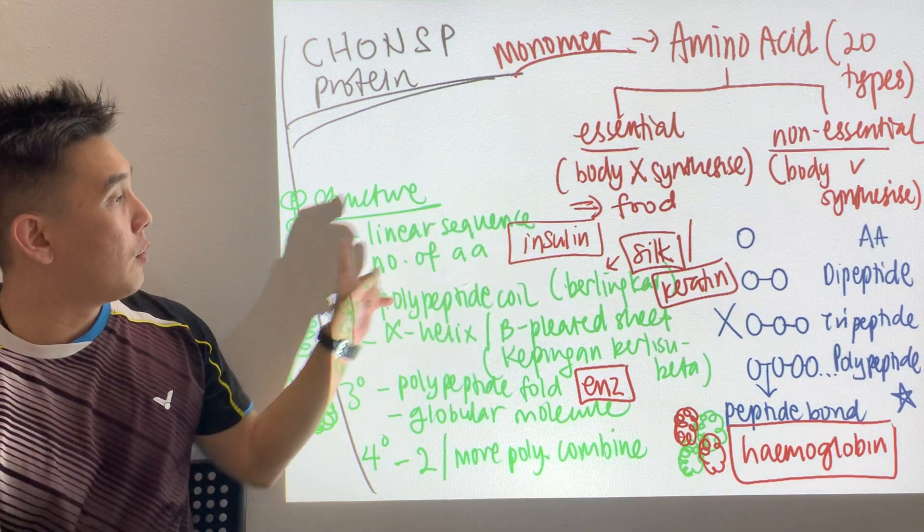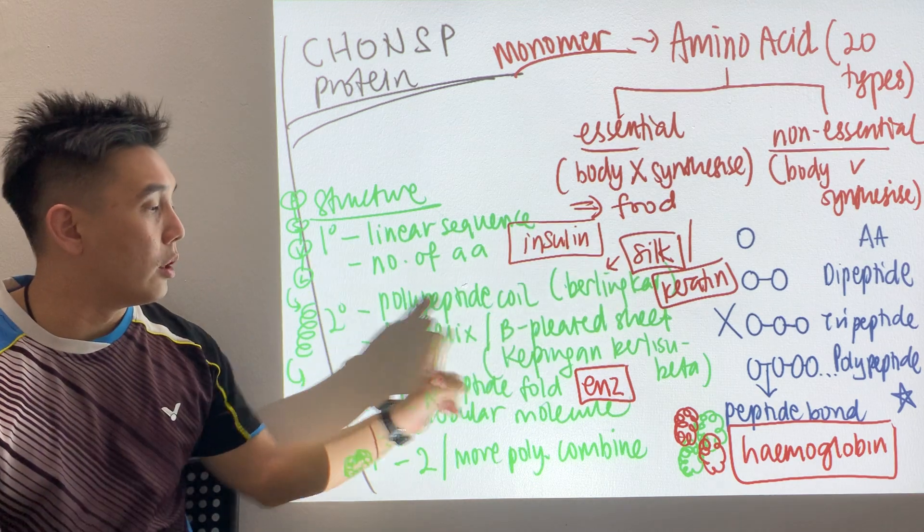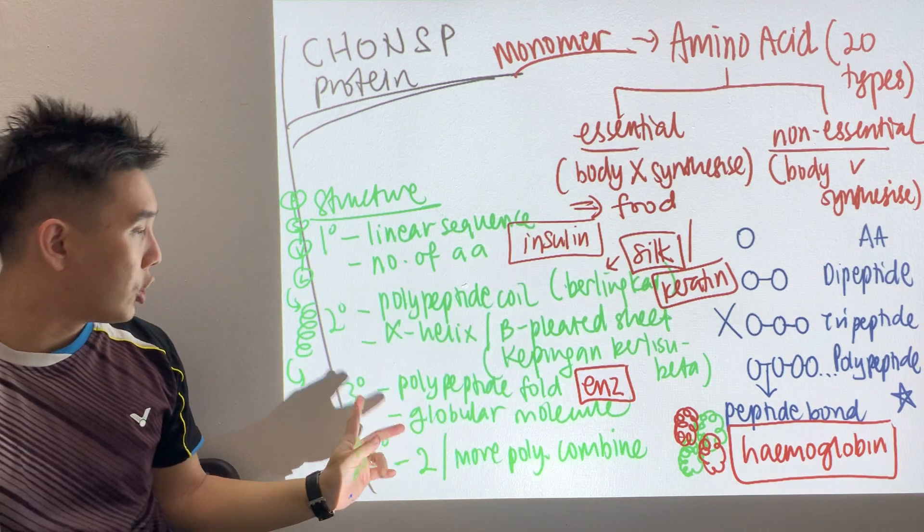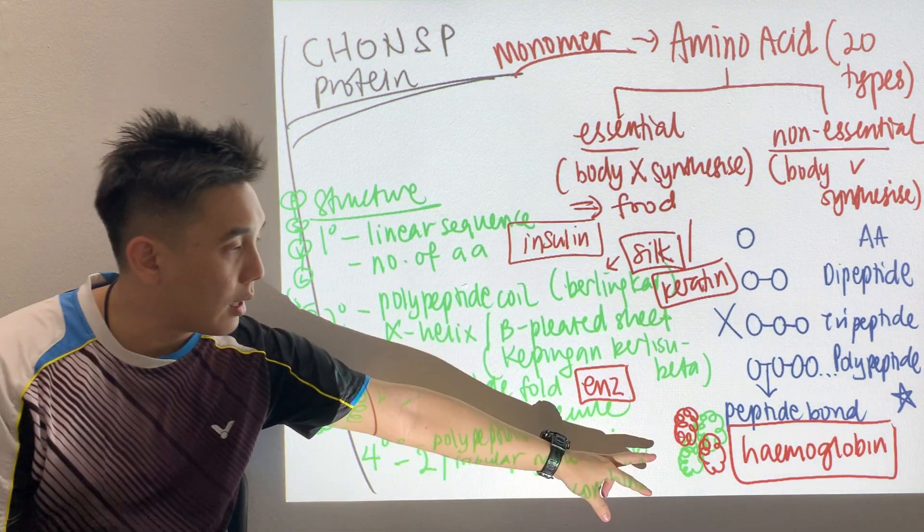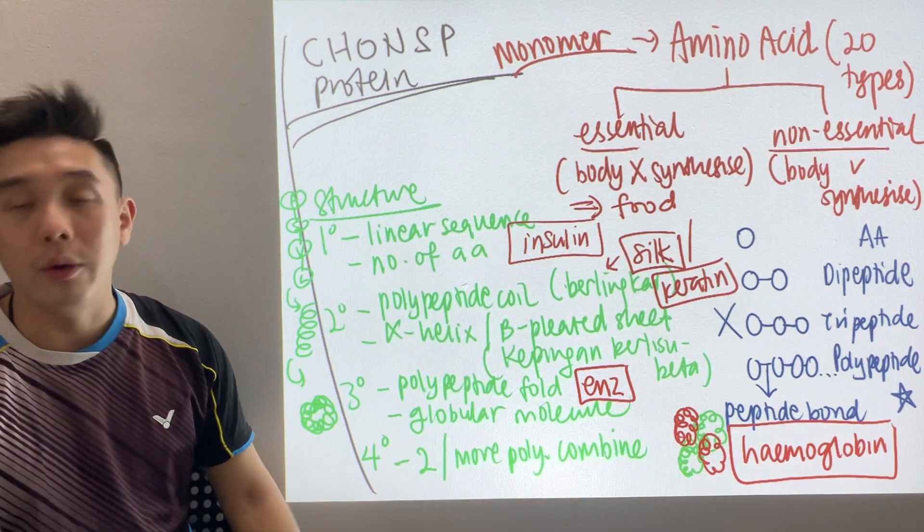In SPM they love to target examples. For primary structure, the example is insulin — the one diabetic patients inject before meals. For secondary structure, examples are sutera (silk) or keratin, which makes up your hair and fingernails. For tertiary structure, always enzymes. And for quaternary structure, always hemoglobin.